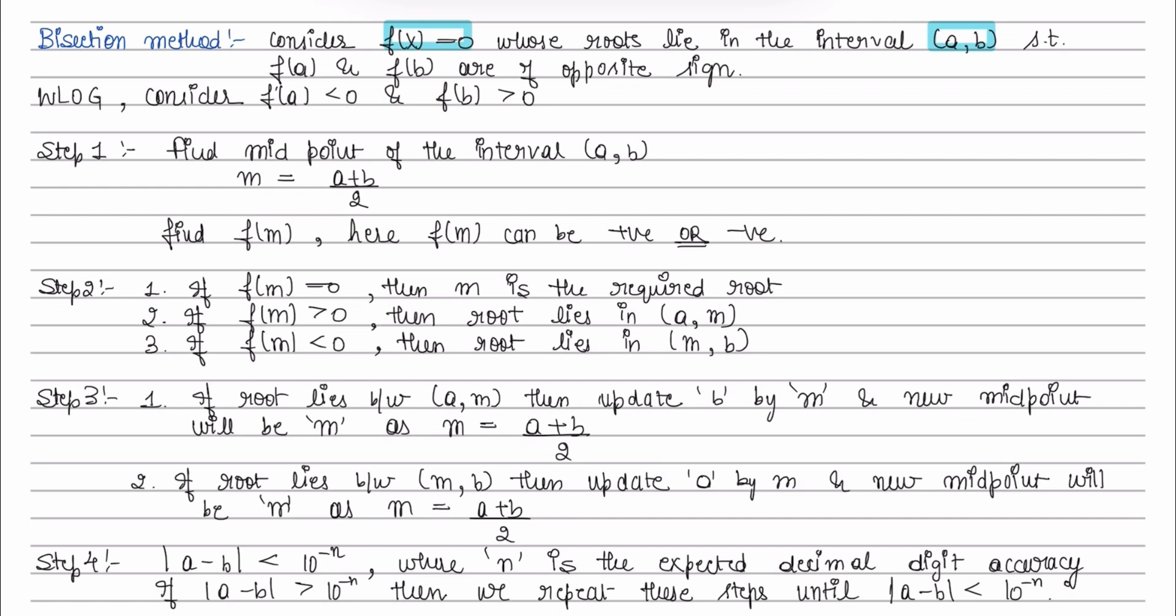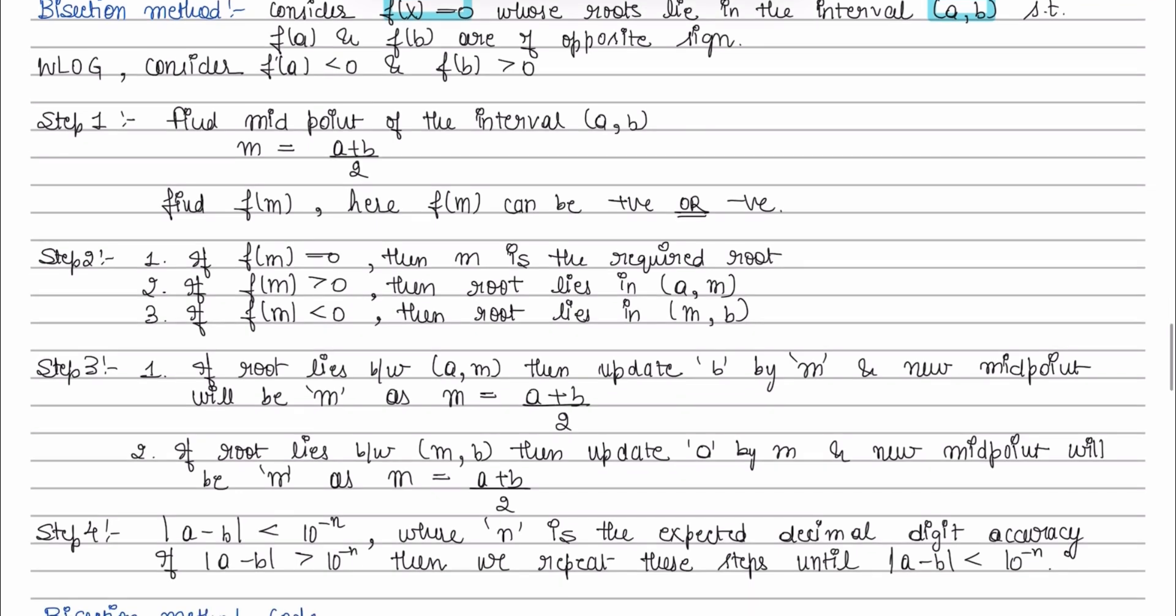So by default we have considered that f of a is negative and f of b is positive. And then we will start the bisection method with step 1 by finding the midpoint and finding the nature of how the function behaves on m will give us the next required interval.